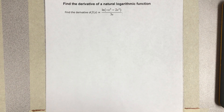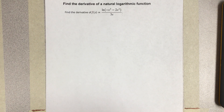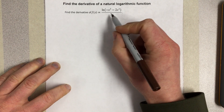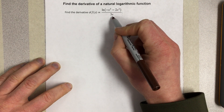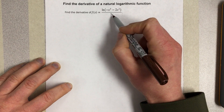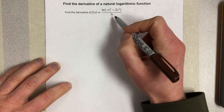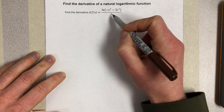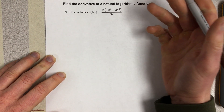In this video, we want to find the derivative of a natural logarithmic function. Specifically, find the derivative of f(x) = ln((-x³ - 2x²) / 3x). I can use the product rule or the quotient rule here. Since there's just one term in the denominator, I can write that in the numerator as x to the negative 1. I typically like to do that because the product rule is a little simpler.